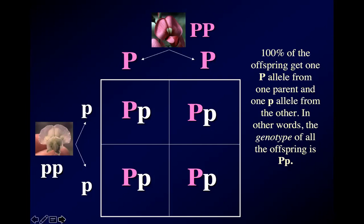The genotype of all of the offspring is going to be big P, little p. Genotype refers to what alleles an organism is carrying. Phenotype is the word we use for what physical traits the organism has. So the phenotype of all of these offspring is purple flowers, and the genotype is big P, little p.